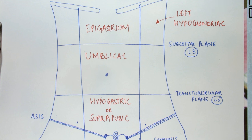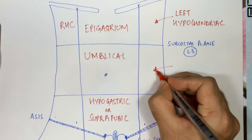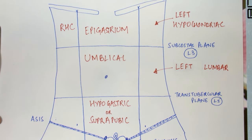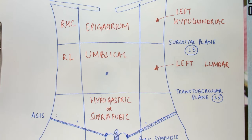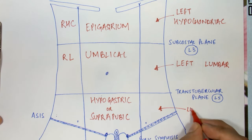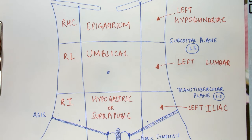The areas on either side of the epigastrium are the hypochondriac regions — on the left side is the left hypochondriac region, and on the opposite side is the right hypochondriac region, named because they lie just below the costal cartilages. The two regions on either side of the umbilical region are the left lumbar and right lumbar regions, named because they lie on the sides of the lumbar spine. The lower areas are the left iliac and right iliac regions, named because they lie just above the iliac bones.